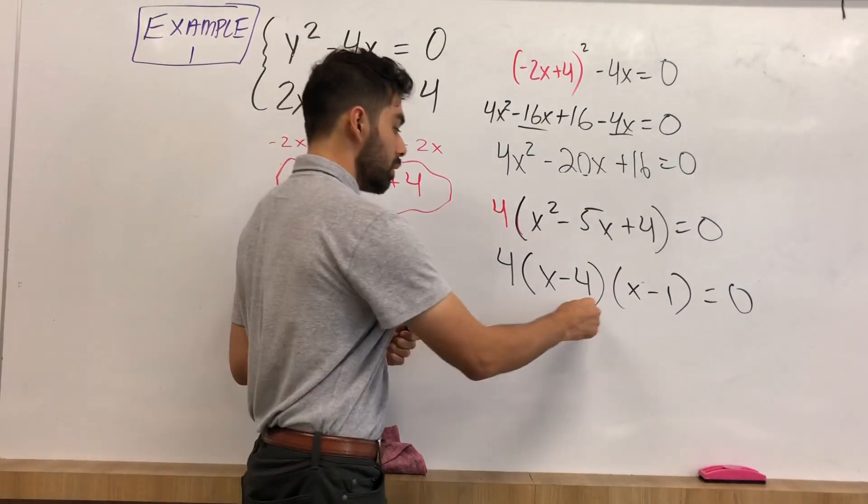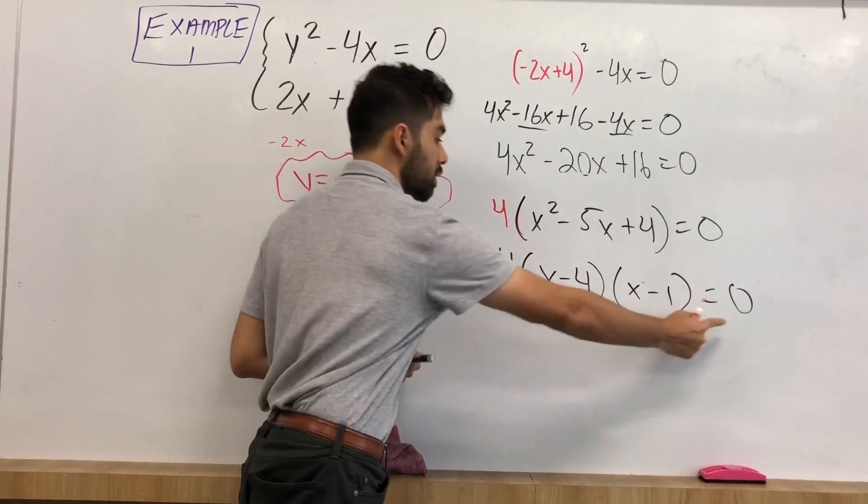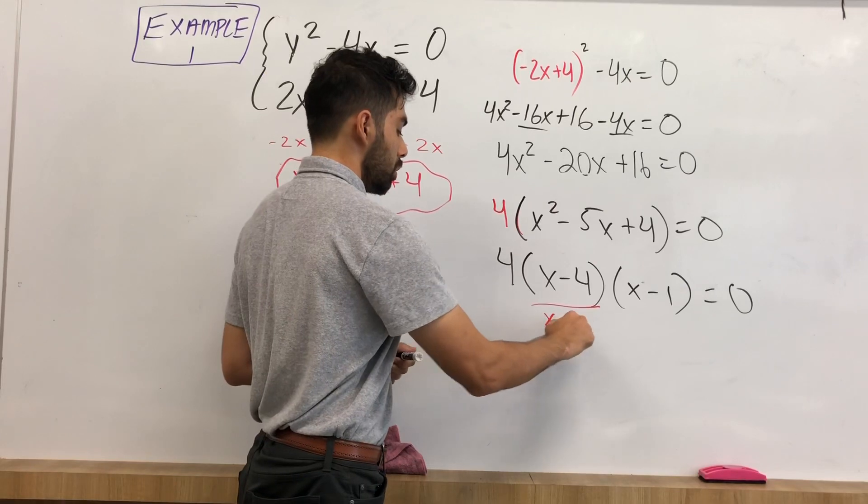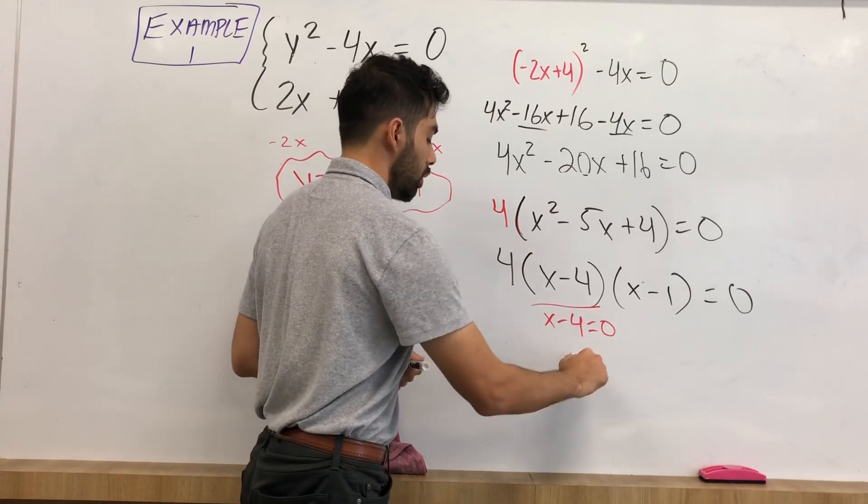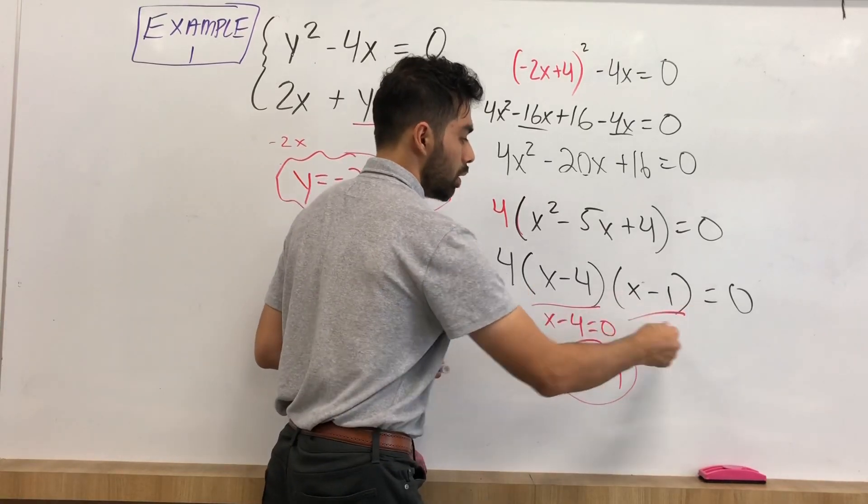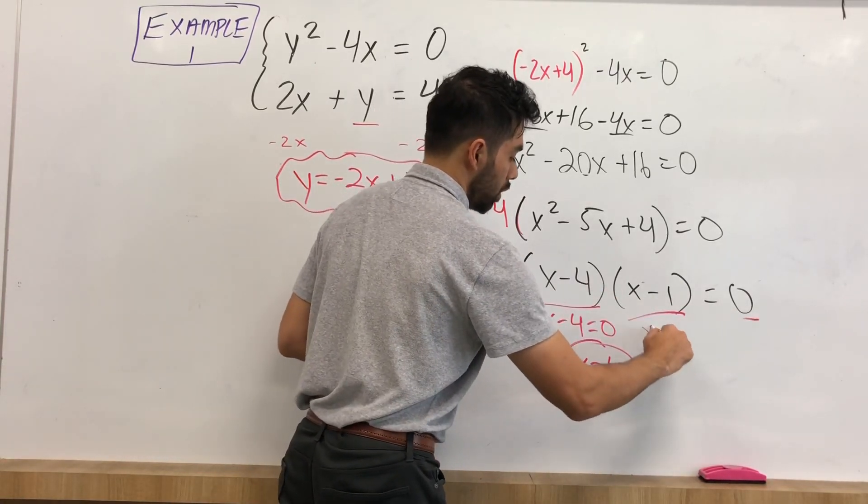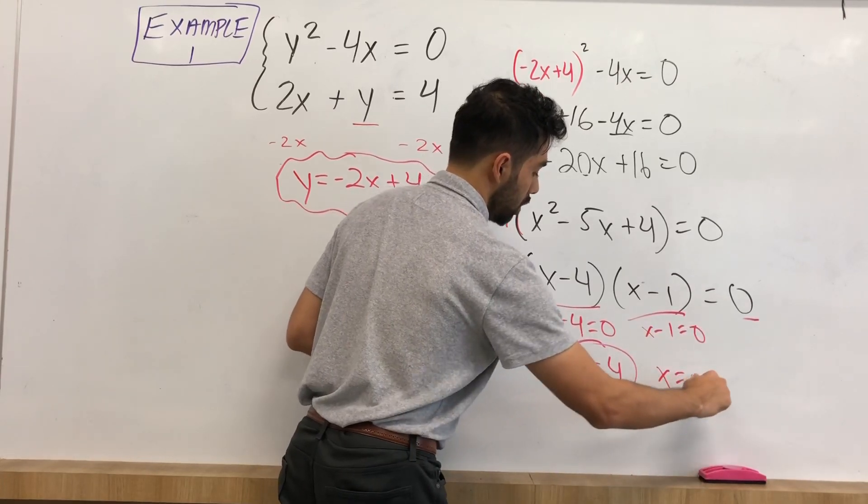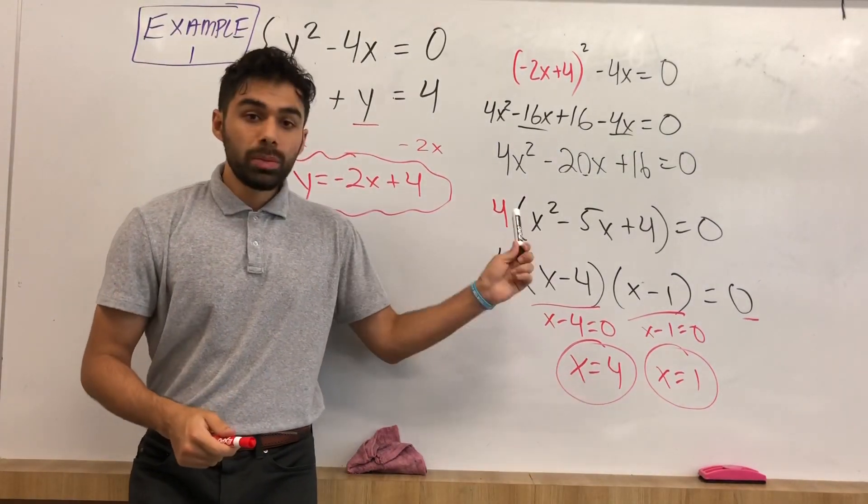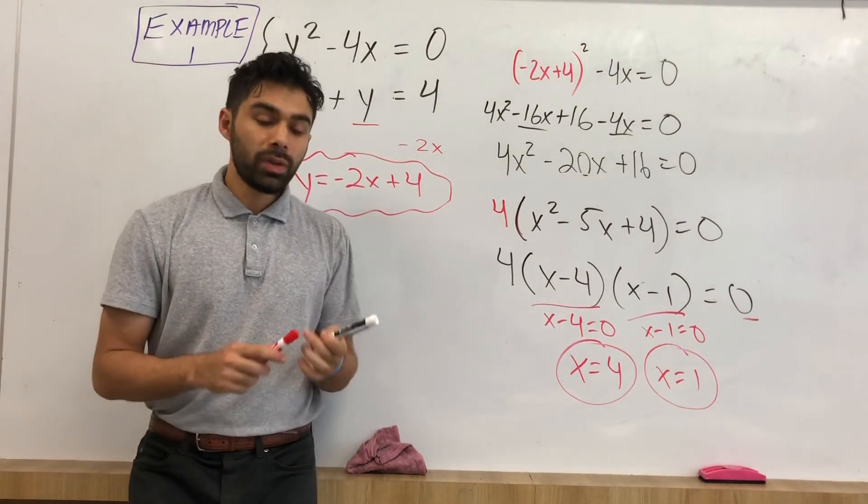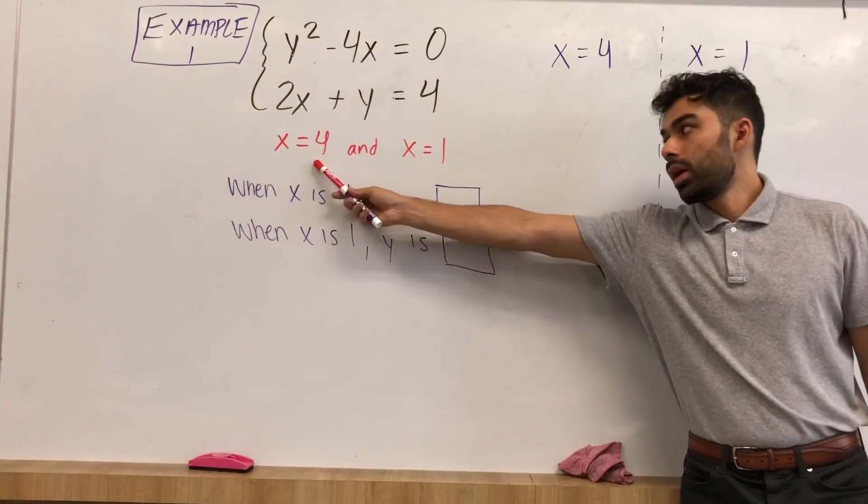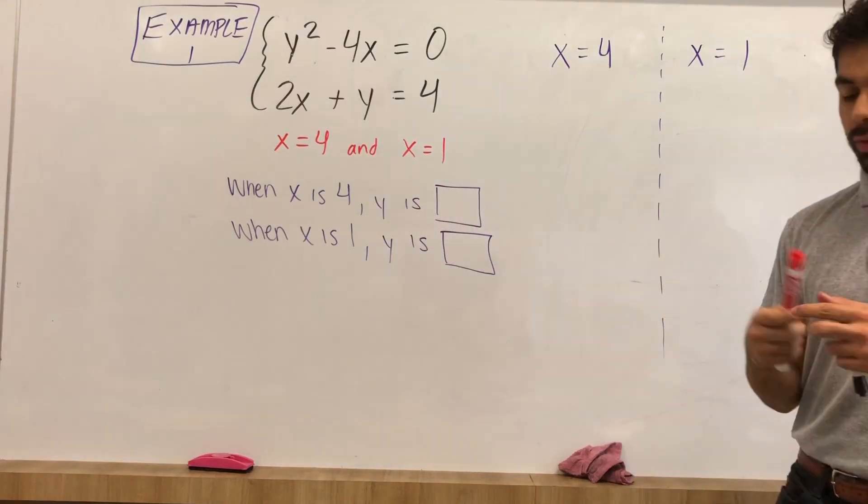Now what we can do is solve for x. x minus 4 is equal to 0. So let's go ahead and solve for that. x minus 4 is equal to 0, x would be 4. x minus 1 equal to 0, that would end up being x is equal to 1. So now I have both values for x.